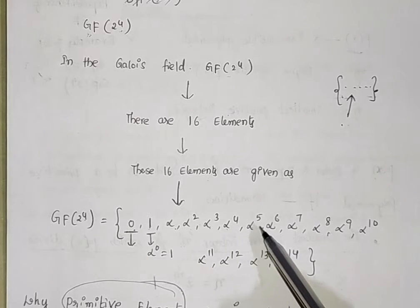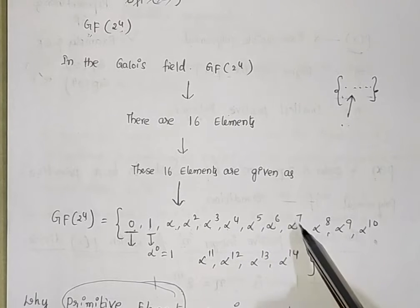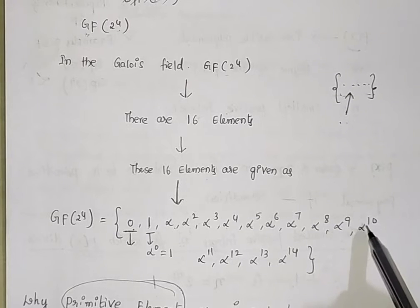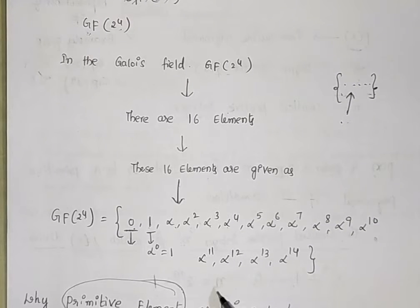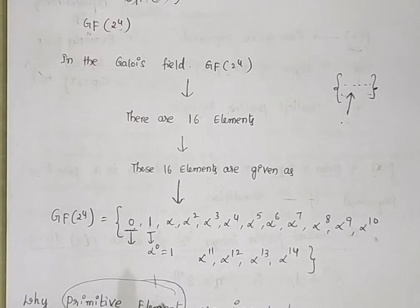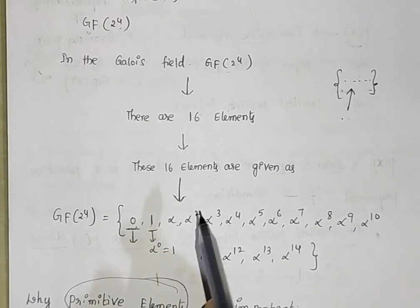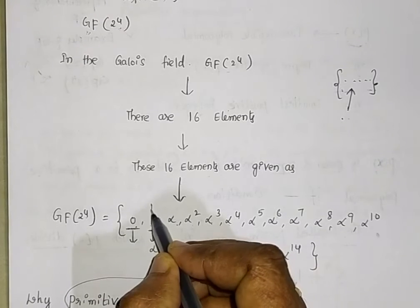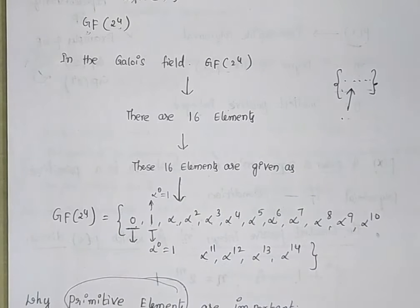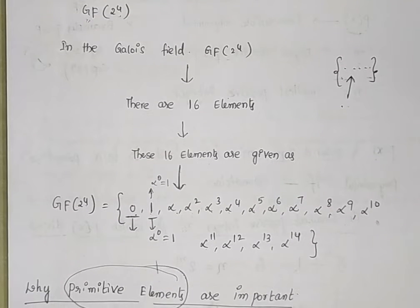The 16 elements of GF(2⁴) are represented by: 0, 1, alpha, alpha², alpha³, alpha⁴, alpha⁵, alpha⁶, alpha⁷, alpha⁸, alpha⁹, alpha¹⁰, alpha¹¹, alpha¹², alpha¹³, alpha¹⁴. Here alpha⁰ equals 1, and alpha is again called the primitive element.